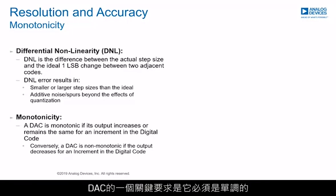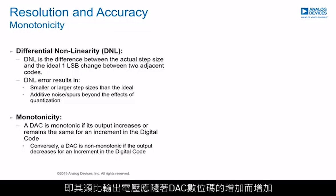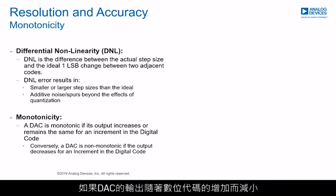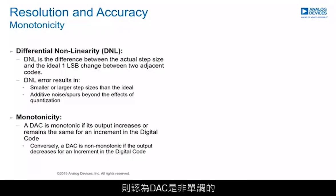A key requirement for a DAC is that it is monotonic — that is, its analog output voltage should increase or remain the same as the DAC digital code increases. If the output of the DAC decreases as the digital code increases, the DAC is said to be non-monotonic.